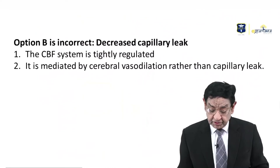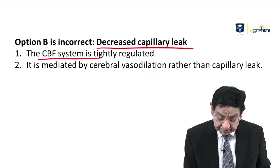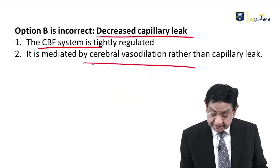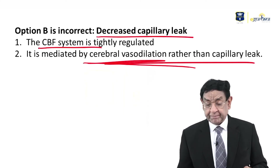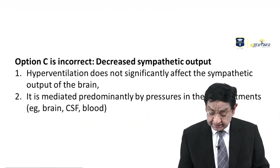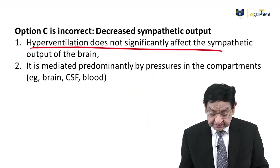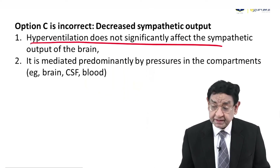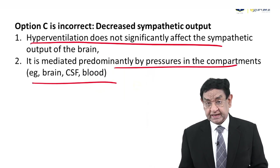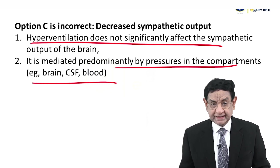Now let's look at the other answer options. Decreased capillary leak — cerebral blood flow is tightly regulated through cerebral vasodilation rather than capillary leak. Capillary leak has no role in reducing ICP. Decreased sympathetic outflow — hyperventilation does not have a significant effect on sympathetic outflow in the brain. It mediates predominantly by pressure of the three compartments: brain, CSF, and blood. Sympathetic has no role to play in the brain.